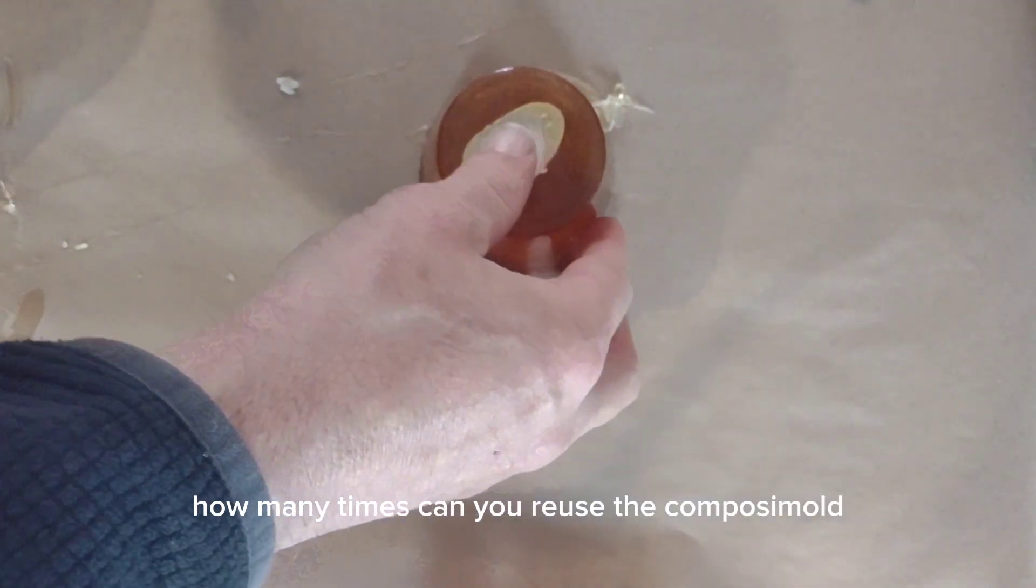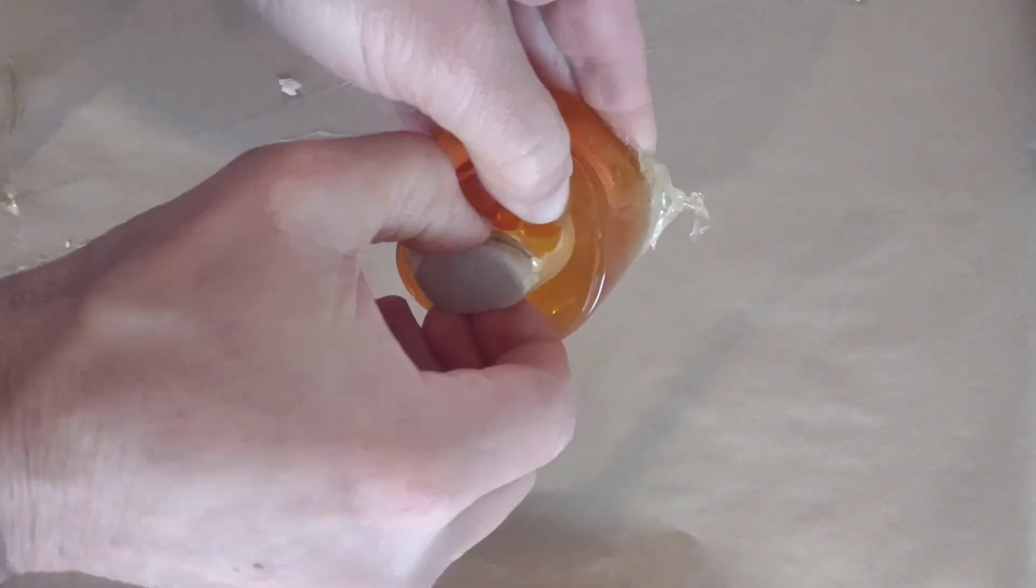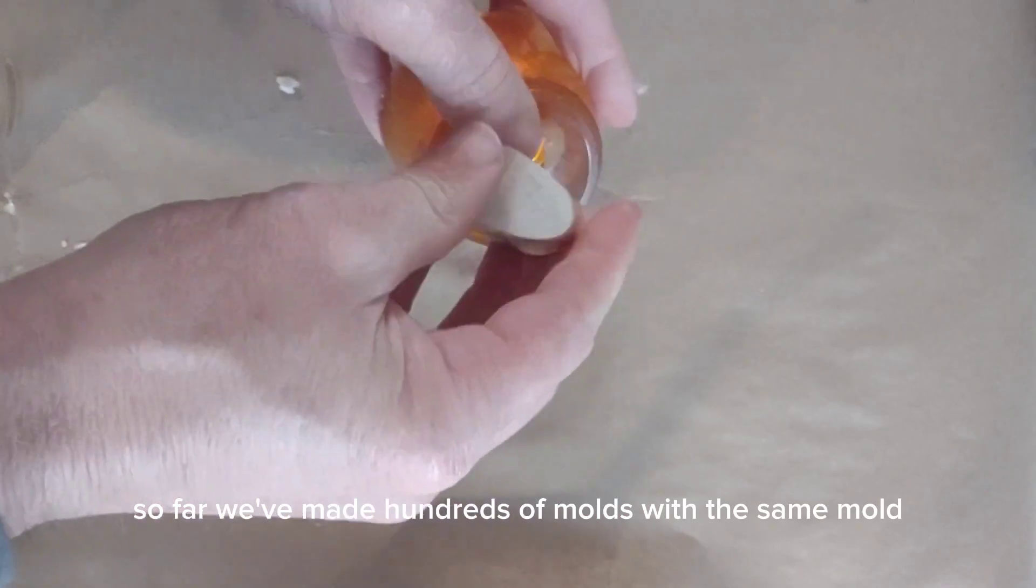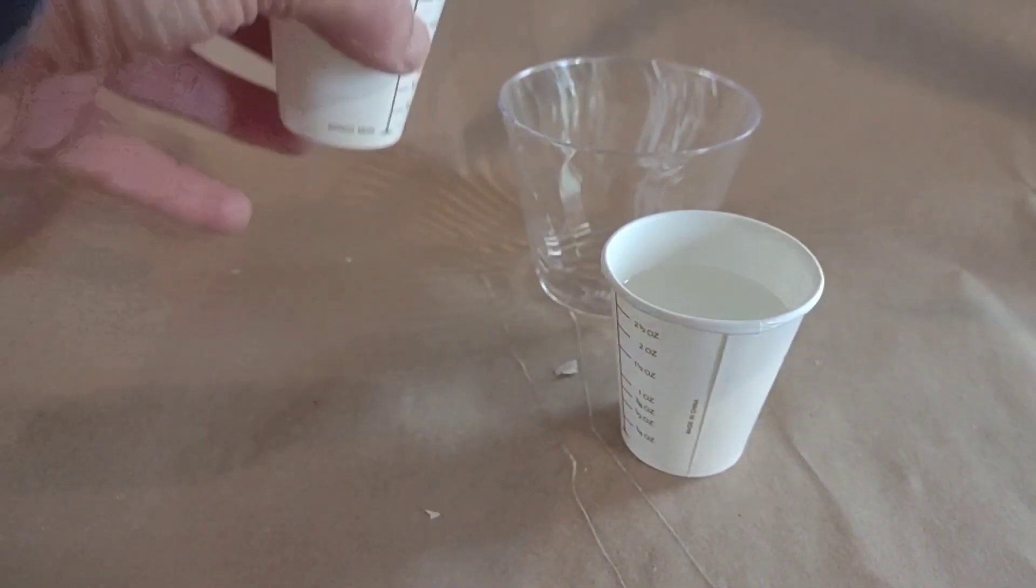A question we are asked often is how many times can you reuse the composite mold? You can remelt the composite mold indefinitely. So far we've made hundreds of molds from the same mold-making material, and each mold can be reused to make multiple copies.